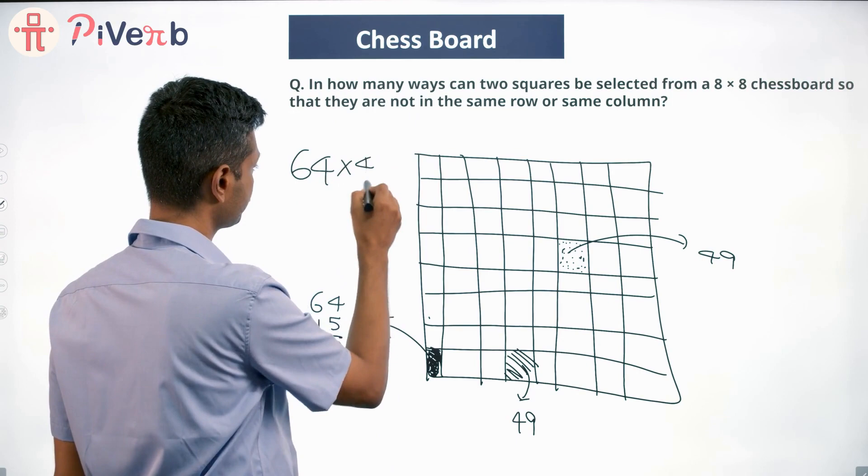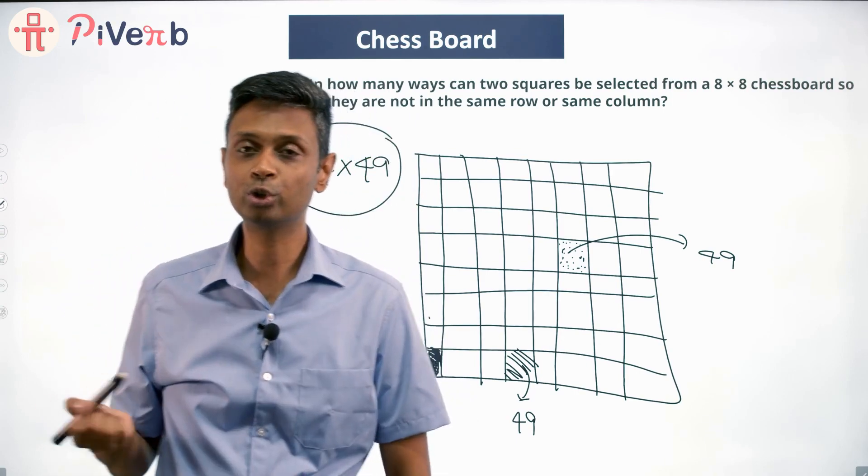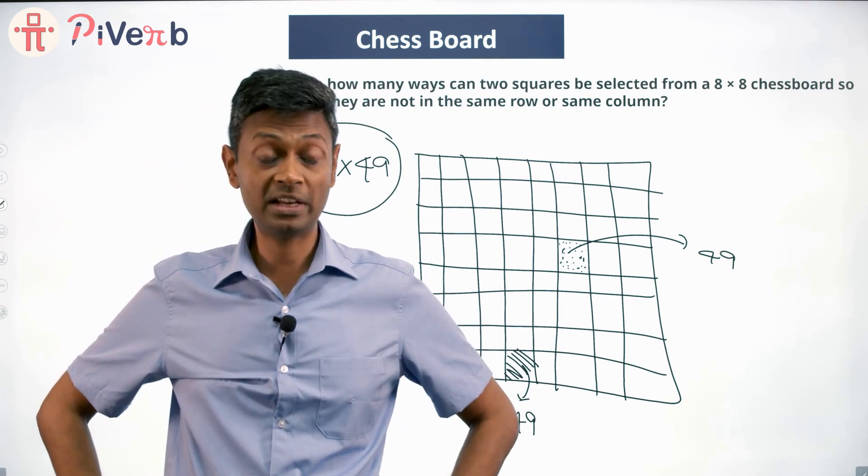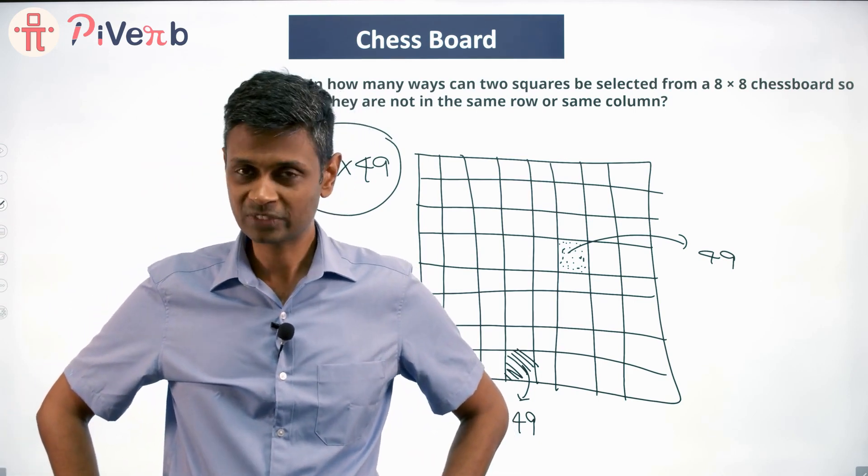The number of ways of selecting this should be 64 × 49. Now the moment I write down this answer, I'm going to introduce you to a very good friend whom you should be very careful about. This friend is called double counting.